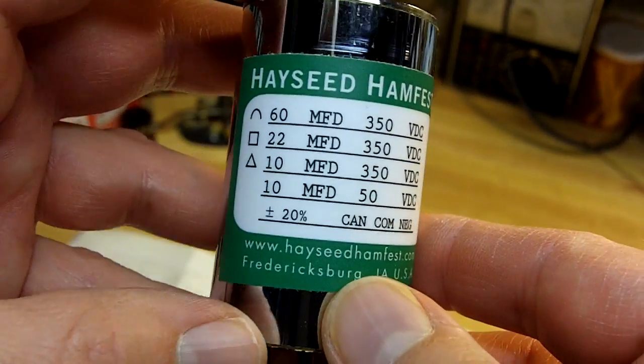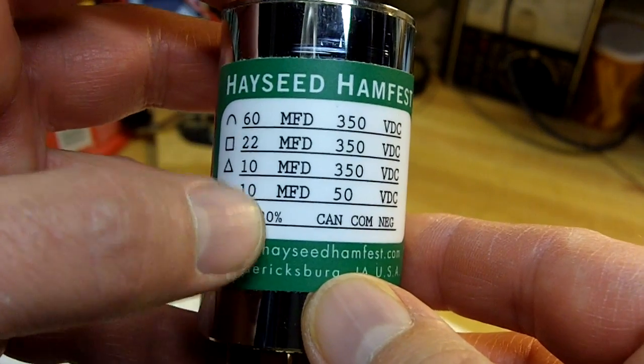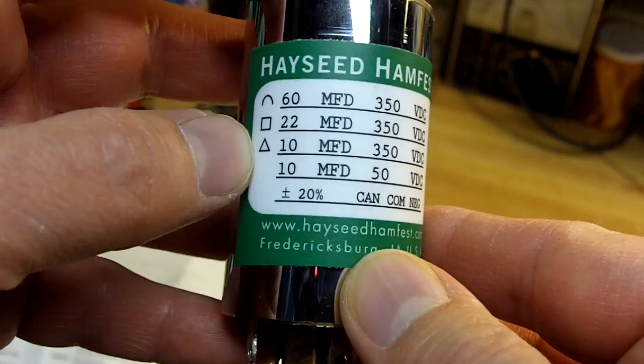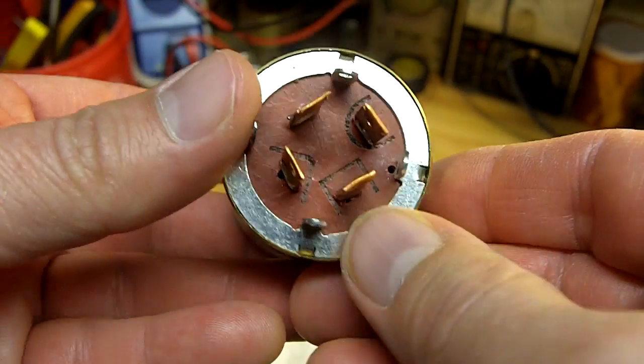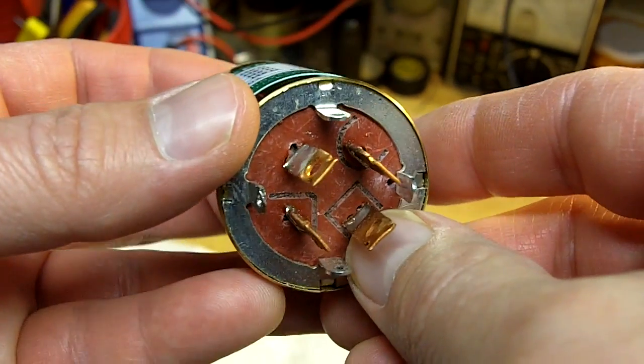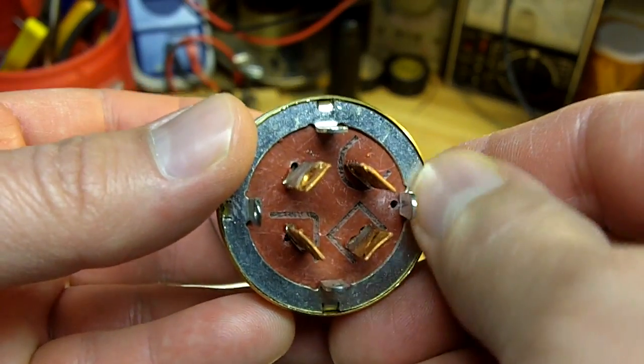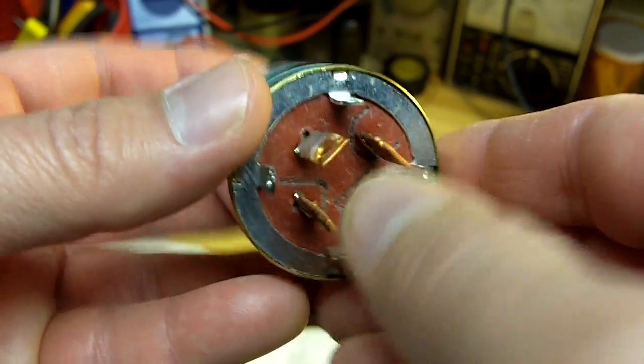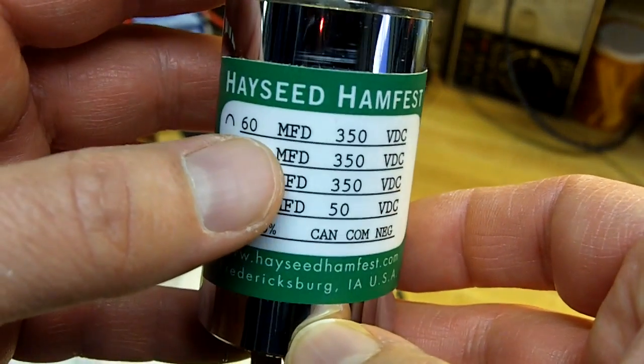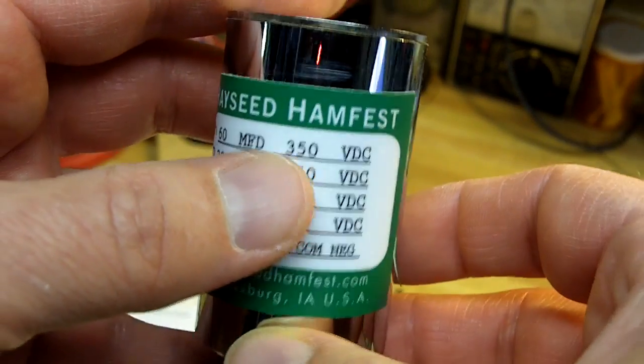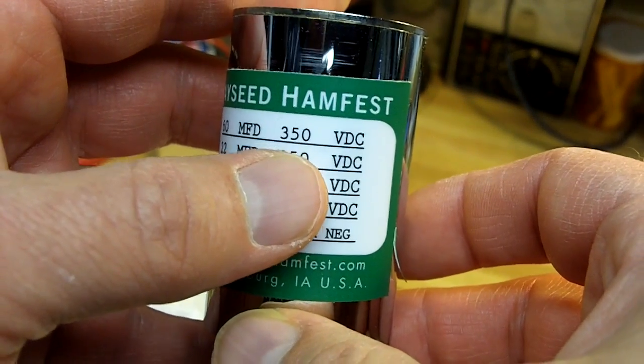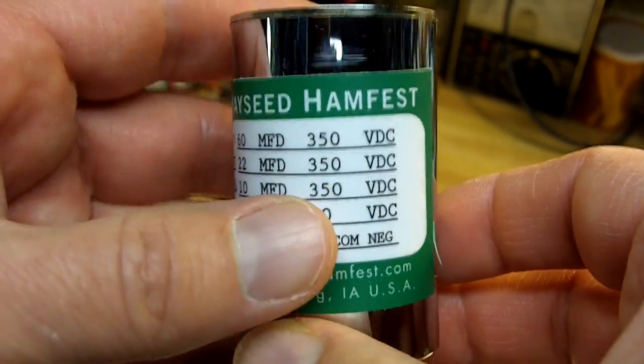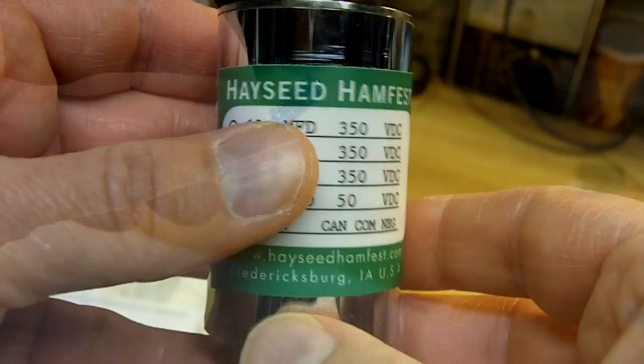Now the way these multi-sections work there's four capacitors inside this housing. You'll see each one has a symbol of its own. So on the bottom there's corresponding legs terminals and the housing is the ground side of each capacitor and then your terminal corresponds to whatever value you need to use here. This is a high voltage rated capacitor 350 volts except for the last one at 50 volts. So you need that for this high voltage circuit.